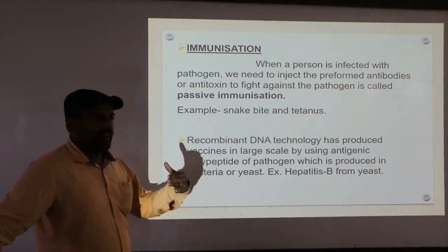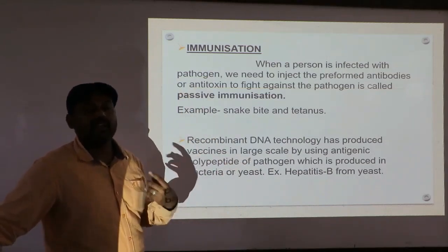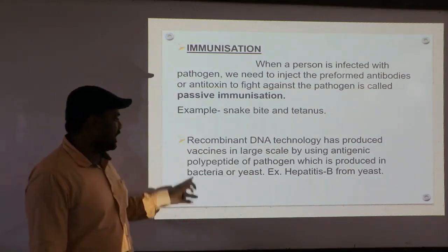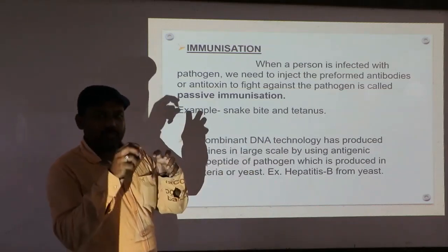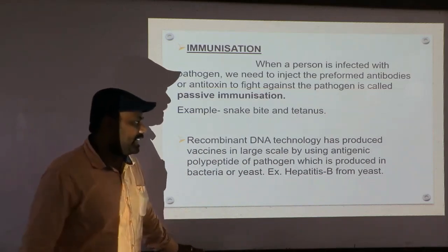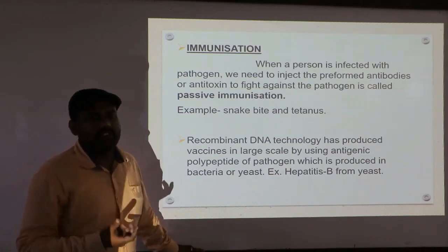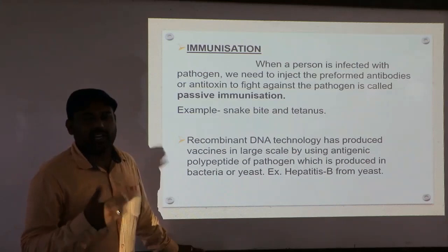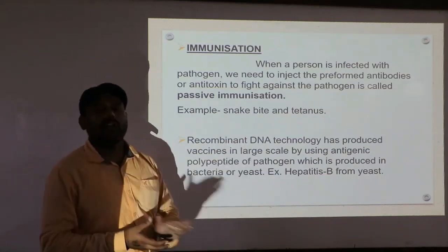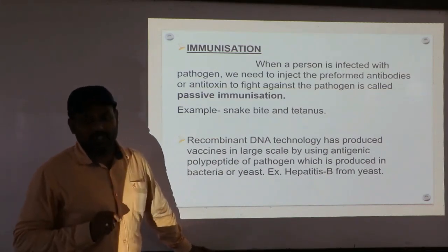Using recombinant DNA technology, scientists have produced vaccines on a large scale using antigenic polypeptides of pathogens, produced in bacteria or yeast. One example is the hepatitis B vaccine, which is produced from yeast. Many vaccines are produced using bacteria, yeast, or other animals. Another example is human insulin, produced from E. coli bacteria using the same recombinant DNA technology — which we will discuss further in the biotechnology chapter.